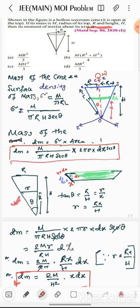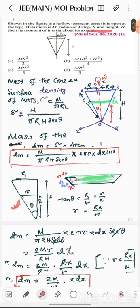This is the magnified picture. And L will be H sec theta. By putting this value we get sigma equals to M divided by pi rh sec theta.